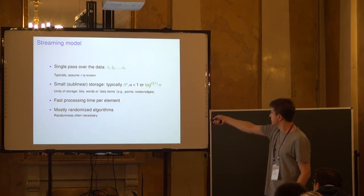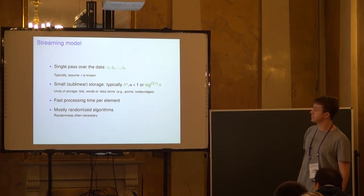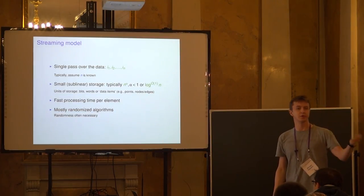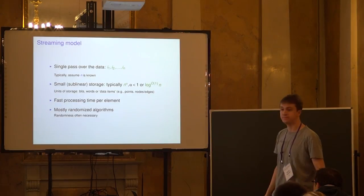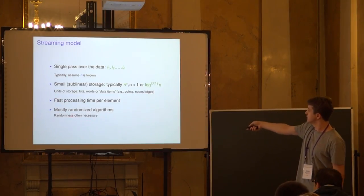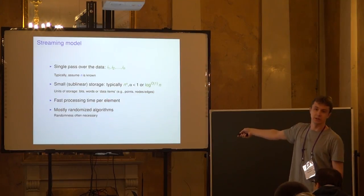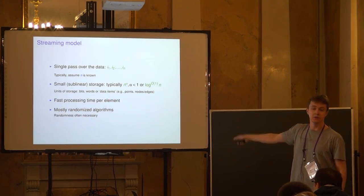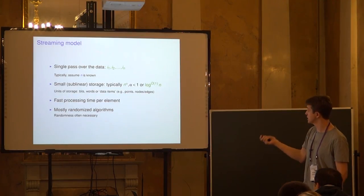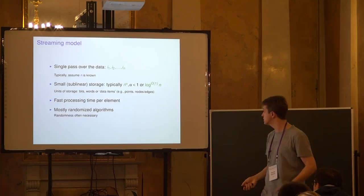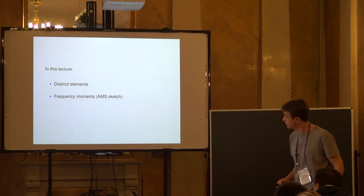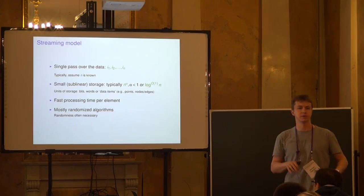Our goal is sublinear storage and also fast processing time per element — as soon as a data item arrives we want to quickly update our representation. Most algorithms in this area are randomized, and very often randomization is in fact necessary to achieve sublinear storage. For the distinct elements problem we'll discuss today, this is indeed the case.